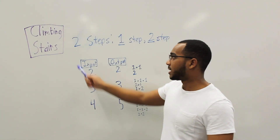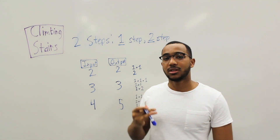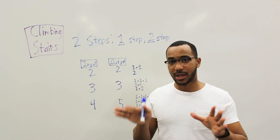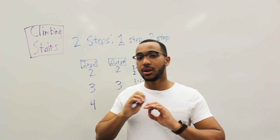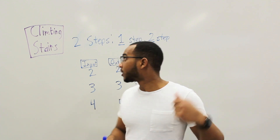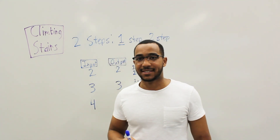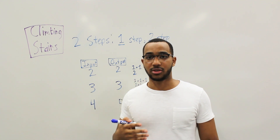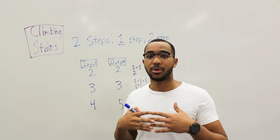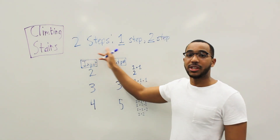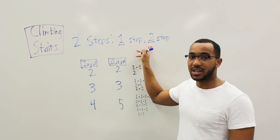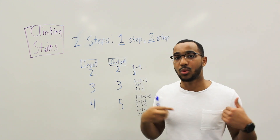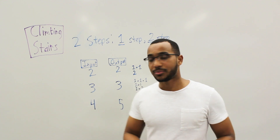Today's question is climbing stairs. This is a fundamental dynamic programming problem, all about subproblems — always all about subproblems. What the question asks is: if I'm given a certain amount of steps to traverse, and I can only take a one-step or a two-step, how many unique ways are there to climb the stairs?